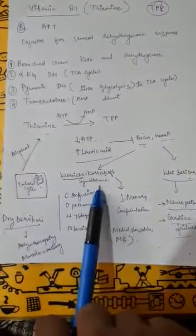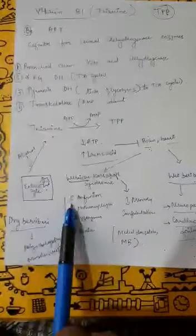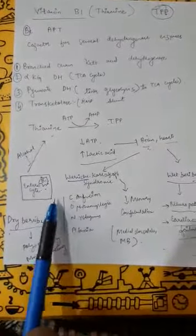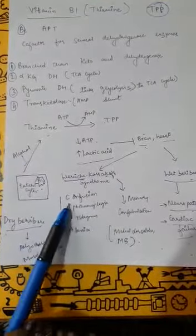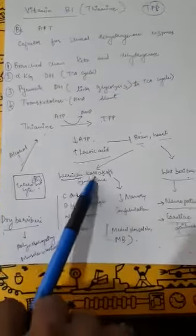The two main organs affected are brain and heart, so it causes Wernicke-Korsakoff syndrome in the brain. The signs and symptoms are: C-O-N-A, that is confusion, ophthalmoplegia, nystagmus, and ataxia.